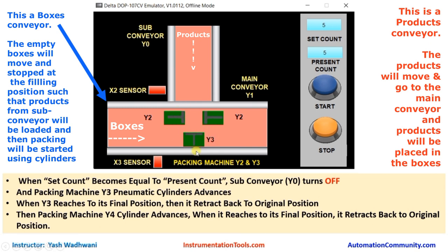The packing machine has two outputs Y2 and Y3, which are pneumatic cylinders. First, output Y2 energizes two cylinders — one moves in one direction and another moves in another direction. When both cylinders reach their final position, they retract back to the original position, and then output Y3 turns on and that cylinder advances.